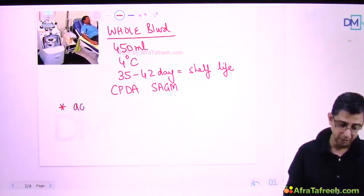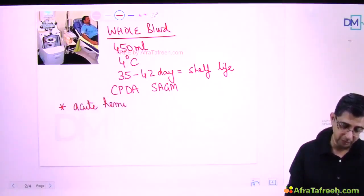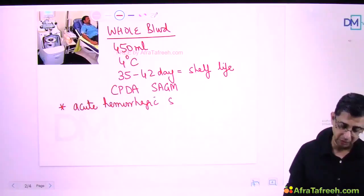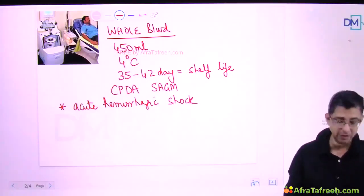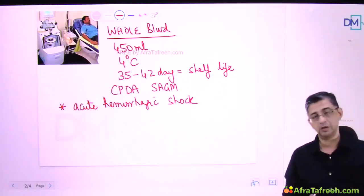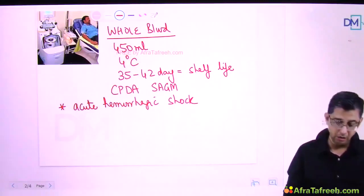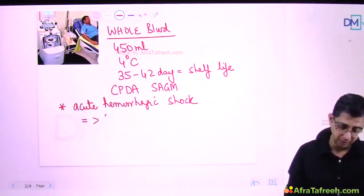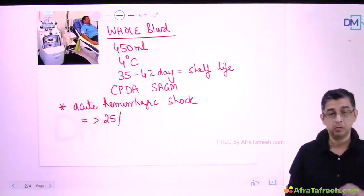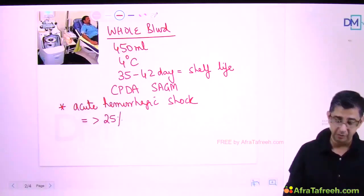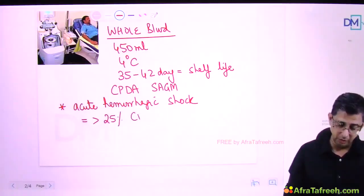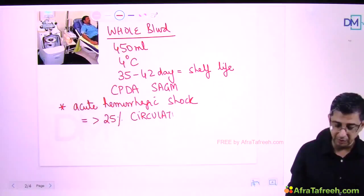The main use of whole blood is volume replacement in patients having acute hemorrhagic shock - such as bleeding esophageal varices, peptic ulcer disease, or gunshot injury. In acute hemorrhagic shock, if a person has been losing more than 25 percent of the total circulating fluid volume, substantial depletion is occurring in the patient.